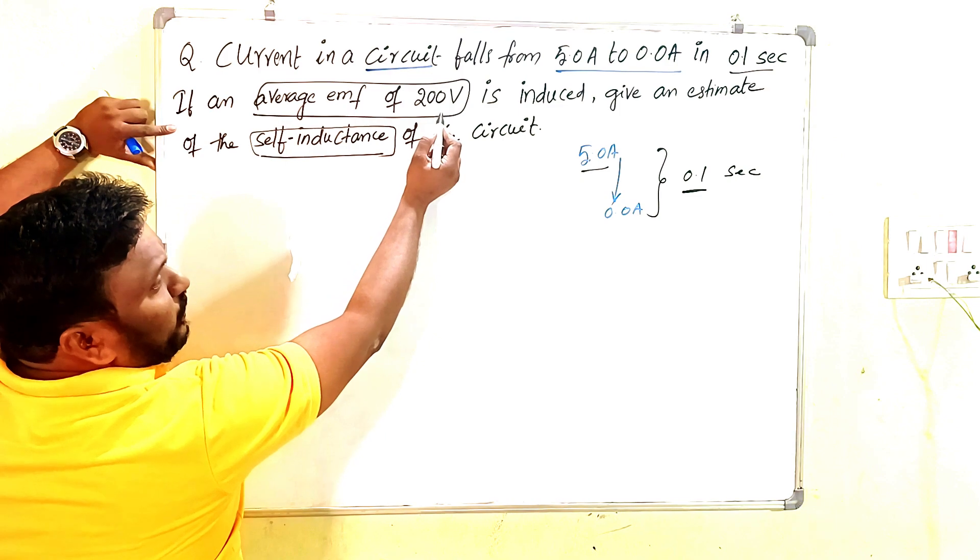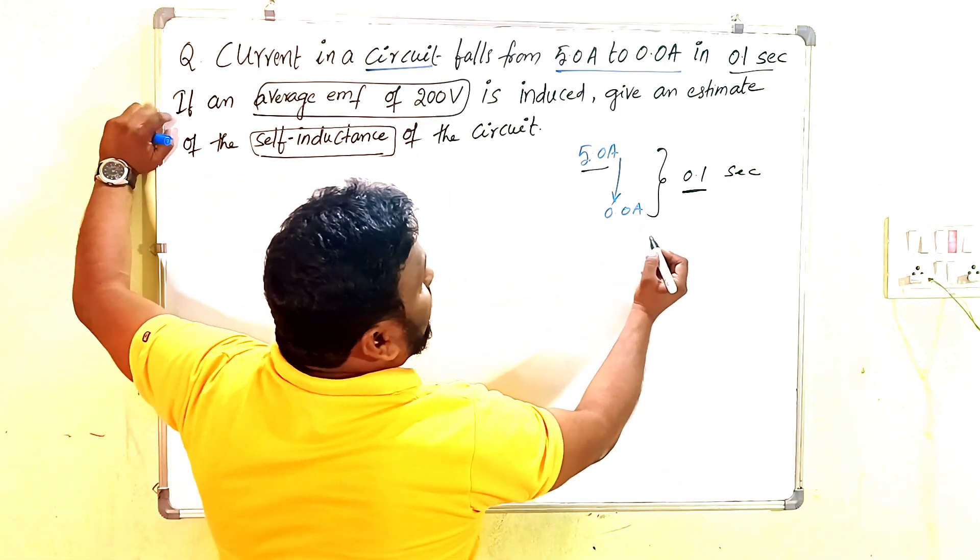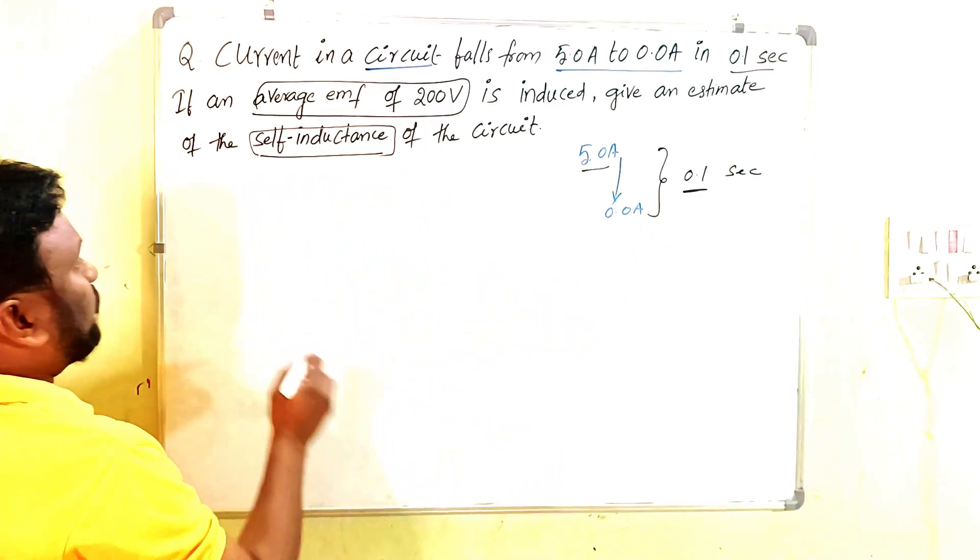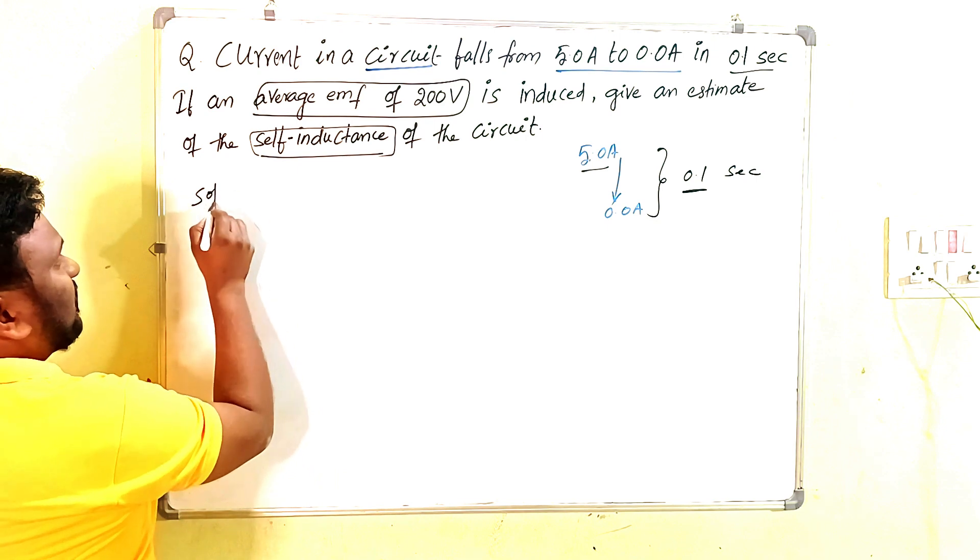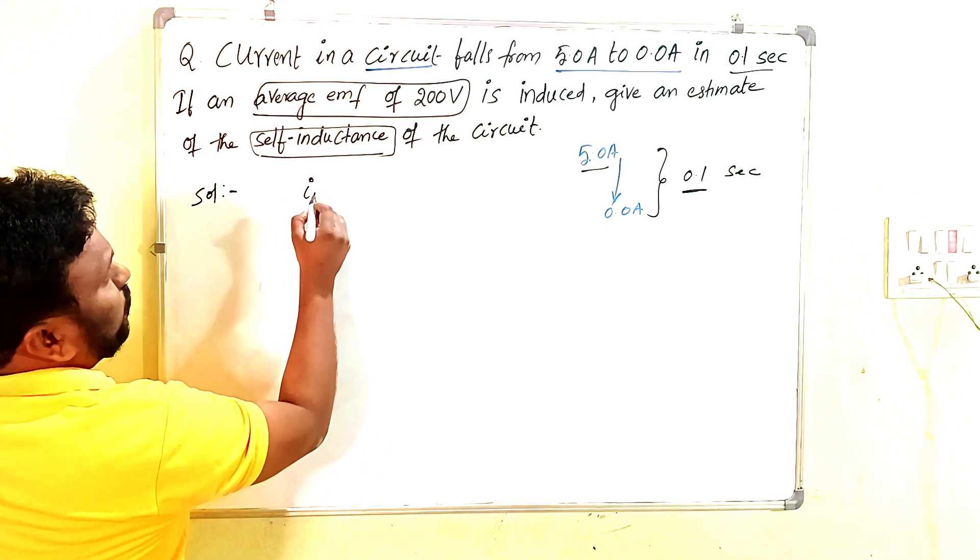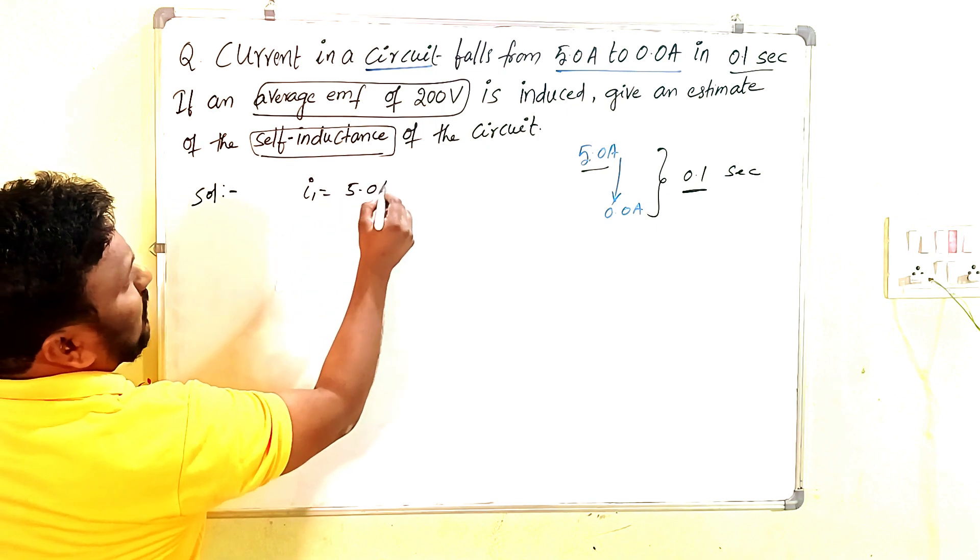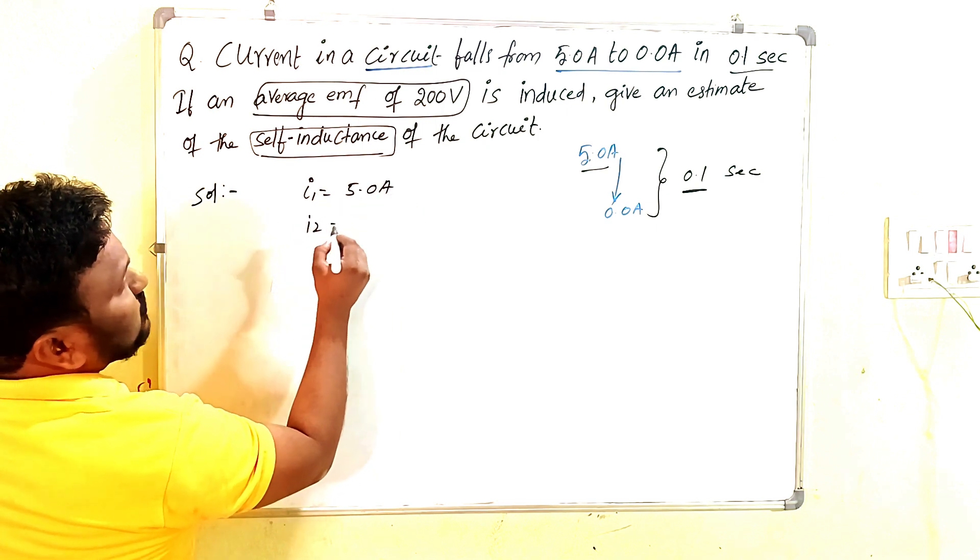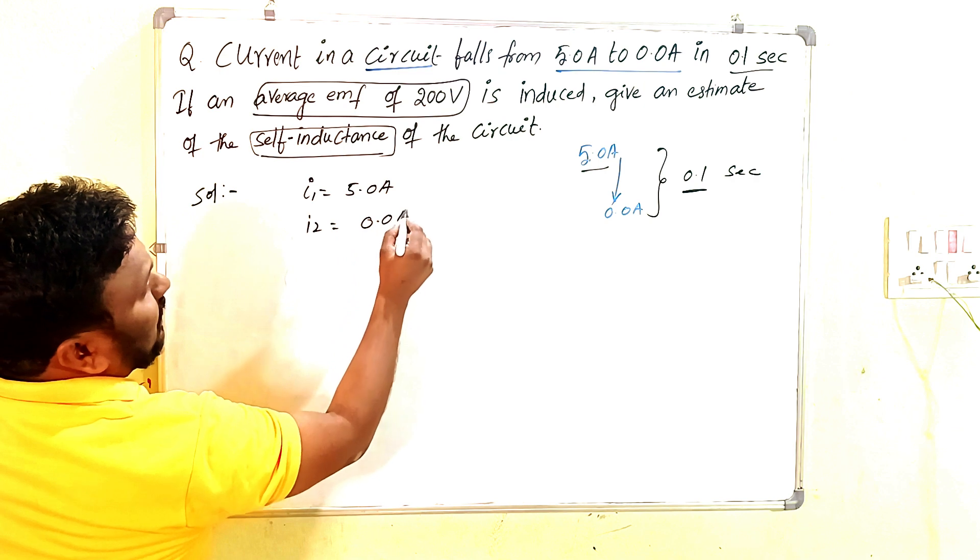Very easy, direct question. Here i1 is 5.0 amperes and i2 is 0.0 amperes.